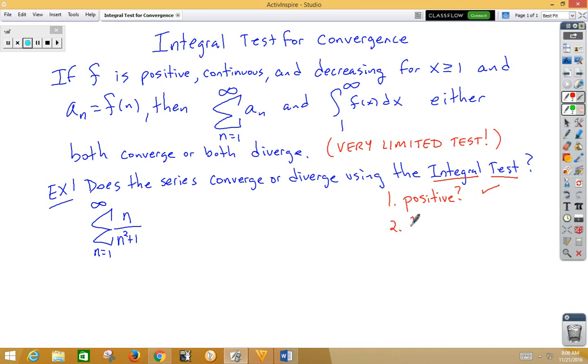Second, is this function continuous? Now, for continuous, we need to think about are there any holes? Are there any jumps? Are there any vertical asymptotes? In other words, does the two-sided limit equal the value at the point? And for this particular function, yes indeed, it does.